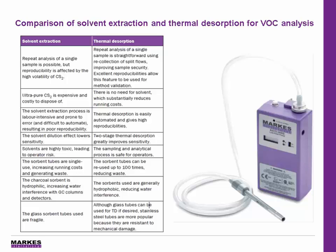The solvent used in solvent extraction is expensive and costly to dispose of, whereas there is no need for solvent when running thermal desorption, greatly reducing costs. Thermal desorption is very easily automated, allowing high throughput and great reproducibility, whereas solvent extraction is more labor intensive. Thermal desorption is known for its great sensitivity, allowing all of the sample to be sent to the detector if necessary — though for high concentration samples, splitting is also used. Solvents are relatively toxic and lead to increased operational risk, whereas no solvents are used in thermal desorption. The sorbents used in thermal desorption are generally hydrophobic and reduce water interference, unlike activated charcoal, which is hydrophilic and increases water interference with the GC column and detector.